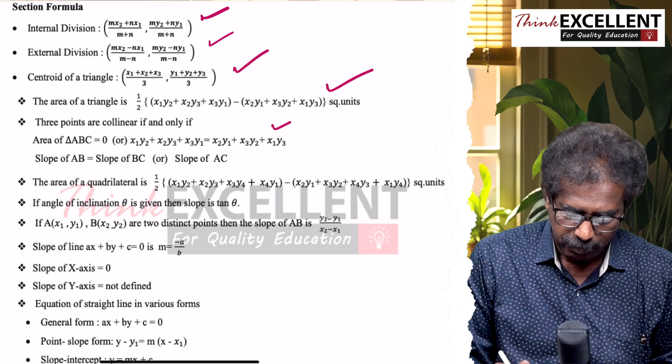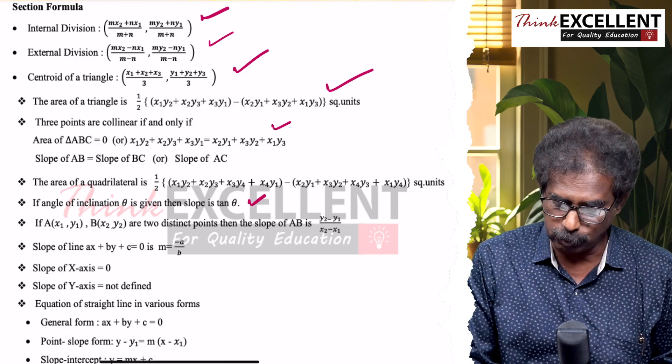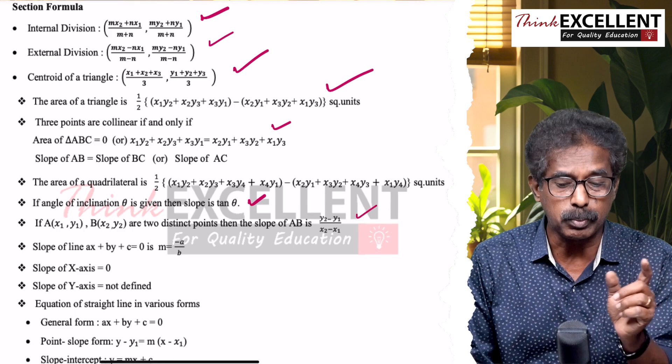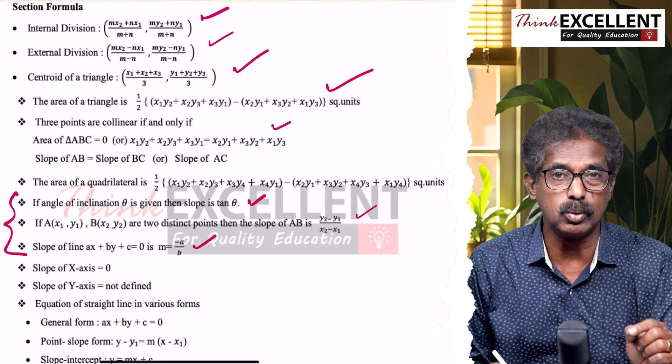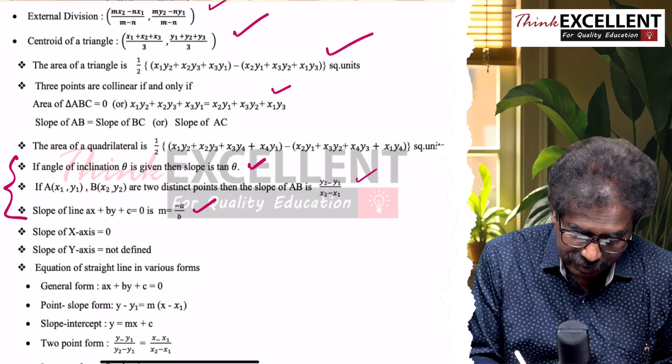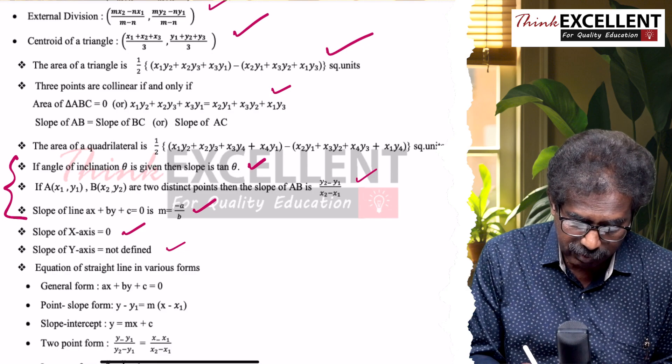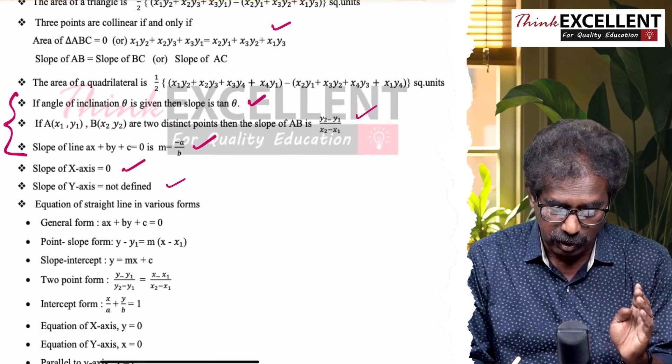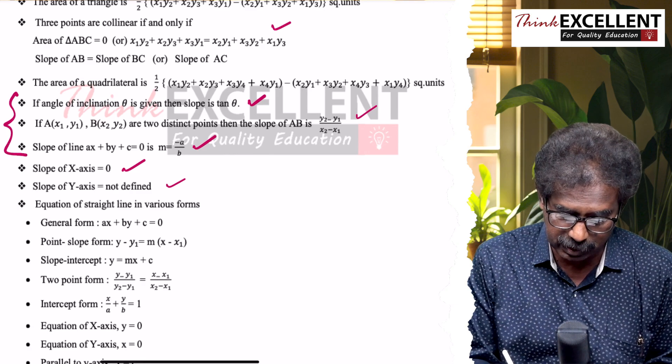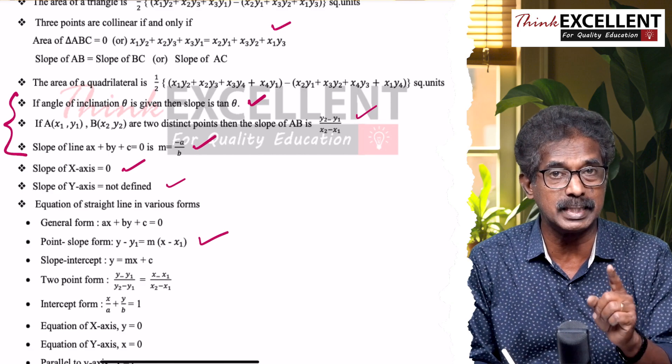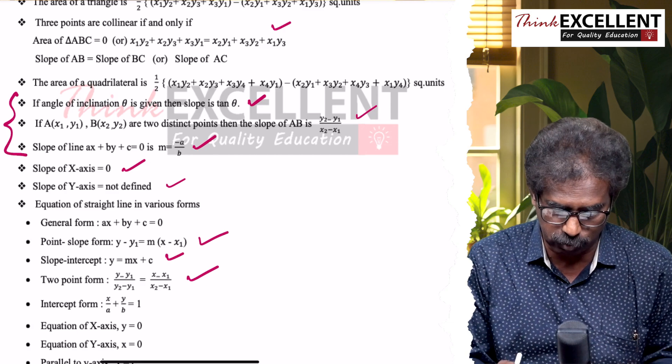Area of a quadrilateral. Then slope, we have different methods. If the angle is given: tan θ. If two points are given: (y2−y1)/(x2−x1). Equation of line: −a/b. Then slope, there are three formulas. Slope of x-axis is zero. Objective question: slope of y-axis is not defined. Then equation of straight line, various forms - we have four forms. Point slope form: y−y1 = m(x−x1). Slope intercept form: y = mx+c, where m is the slope, c is the y-intercept.